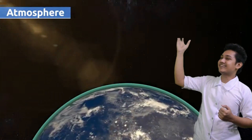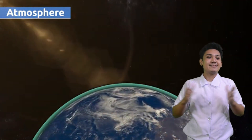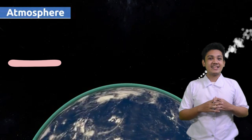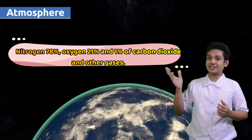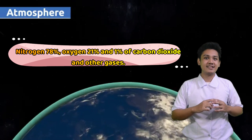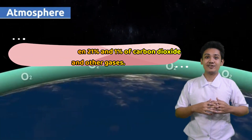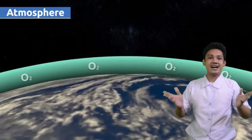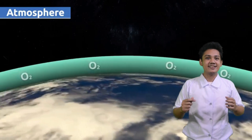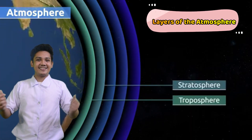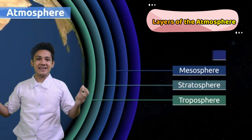We also have the atmosphere. It is mostly composed of nitrogen at 78%, oxygen at 21%, and 1% of carbon dioxide and other gases. It is a blanket of gas that surrounds our planet up to the edge of space. Here are the layers of the atmosphere.